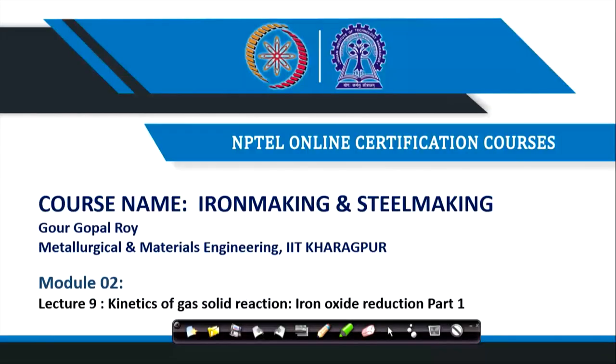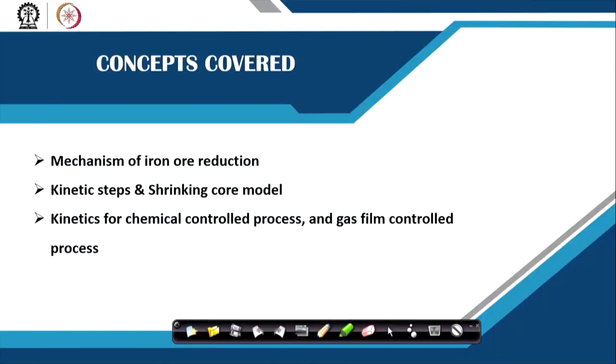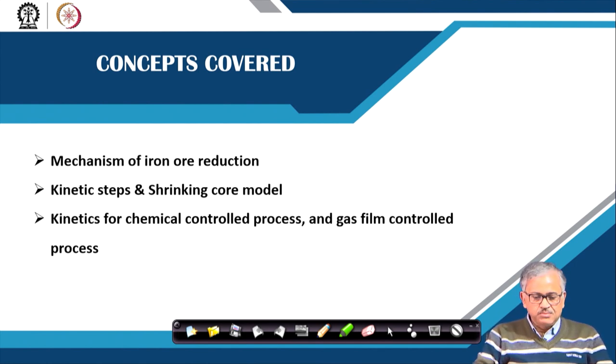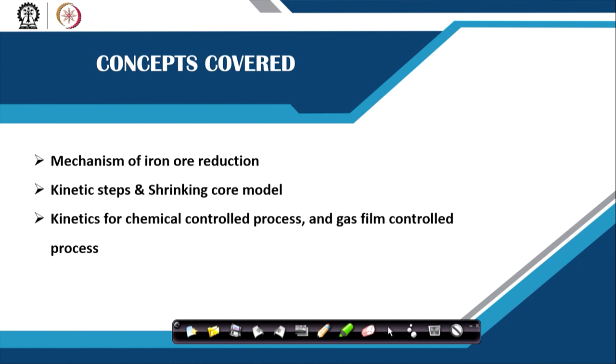Welcome. This is Model 2, Lecture 9, on kinetics of gas-solid reaction — iron oxide reduction, Part 1. This iron oxide reduction kinetics will be covered in two lectures. In the first lecture, I will talk about the model and different rate-controlling mechanisms, and the concepts covered include the mechanism of iron oxide reduction, then the kinetic steps, shrinking core model, and kinetics of chemical control, gas film control, and ash layer diffusion control processes.